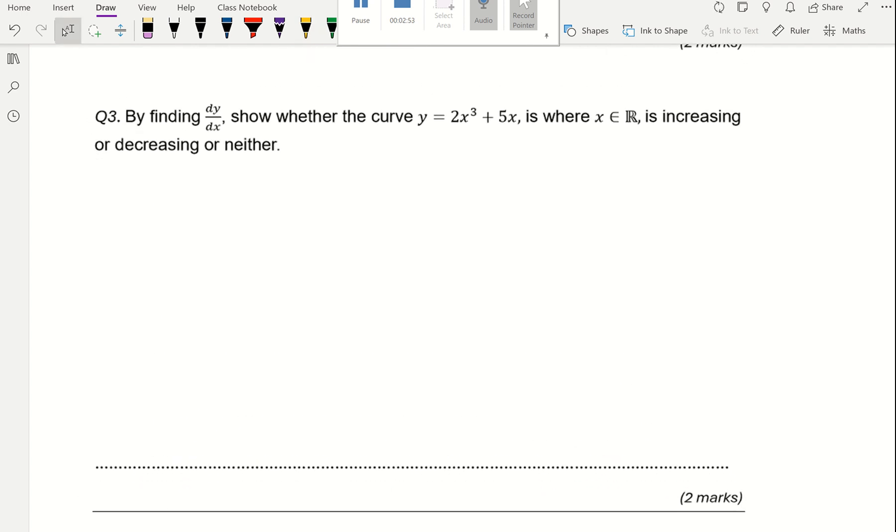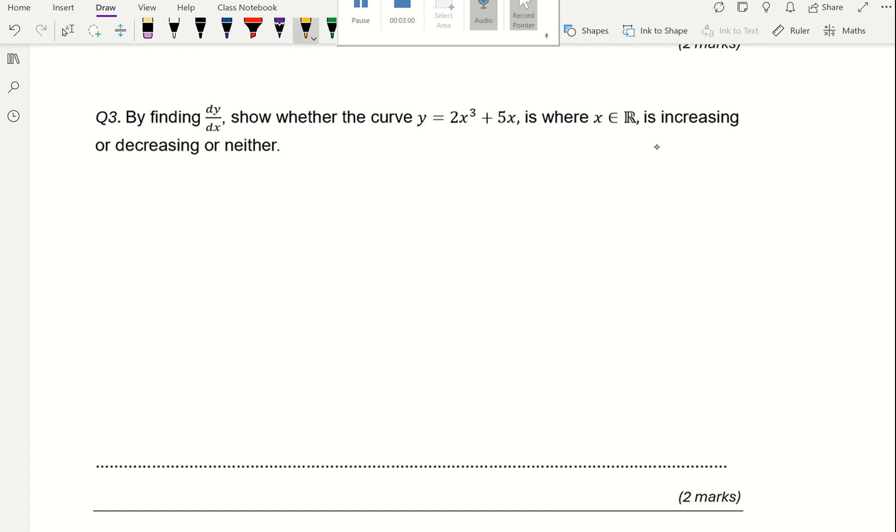This question says by finding dy over dx, show whether the curve y equals 2x cubed plus 5x, where x is an element of all real numbers, is increasing, decreasing, or neither. Your step one is to find dy over dx.